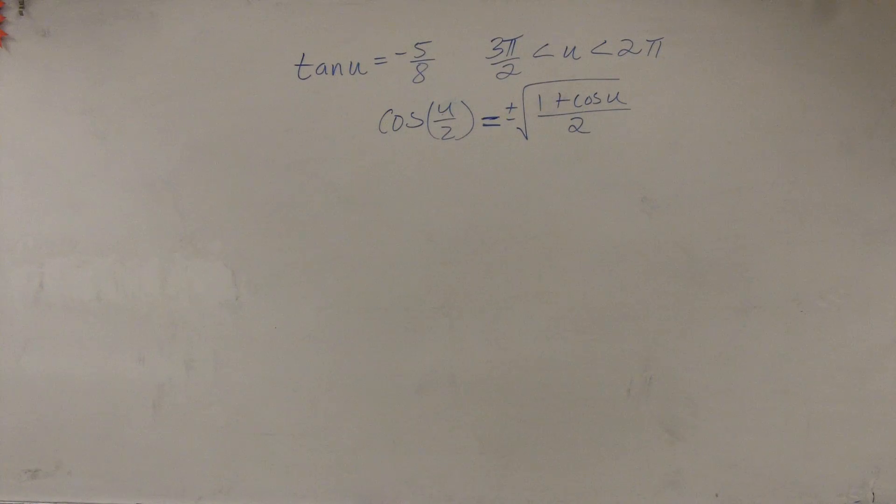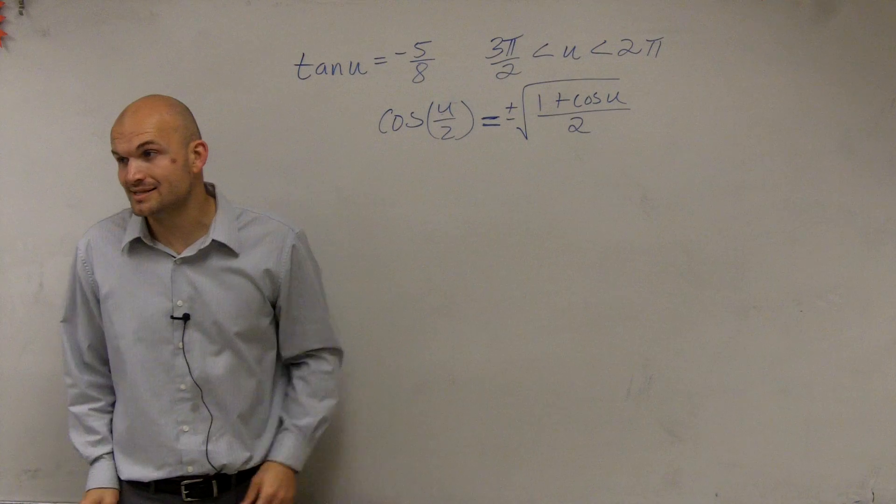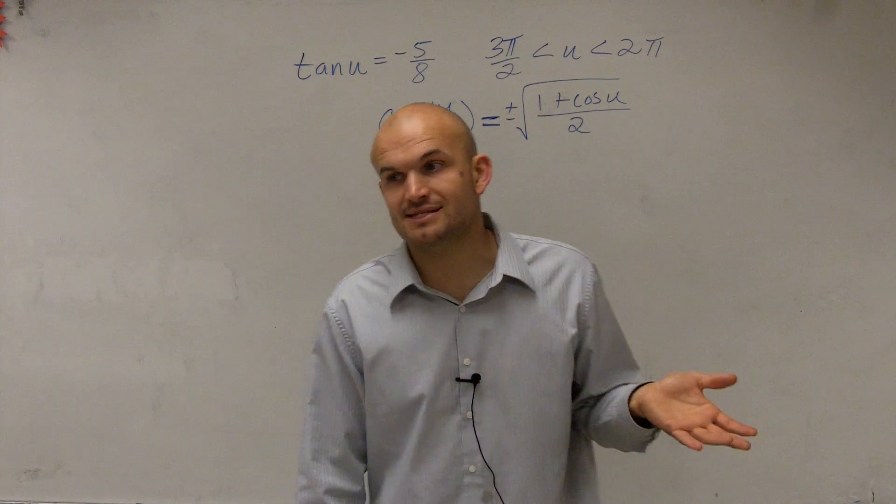So for this problem, I have the tangent of u equals negative 5 eighths. And then I have a constraint of 3 pi over 2 is less than u, which is less than 2 pi.